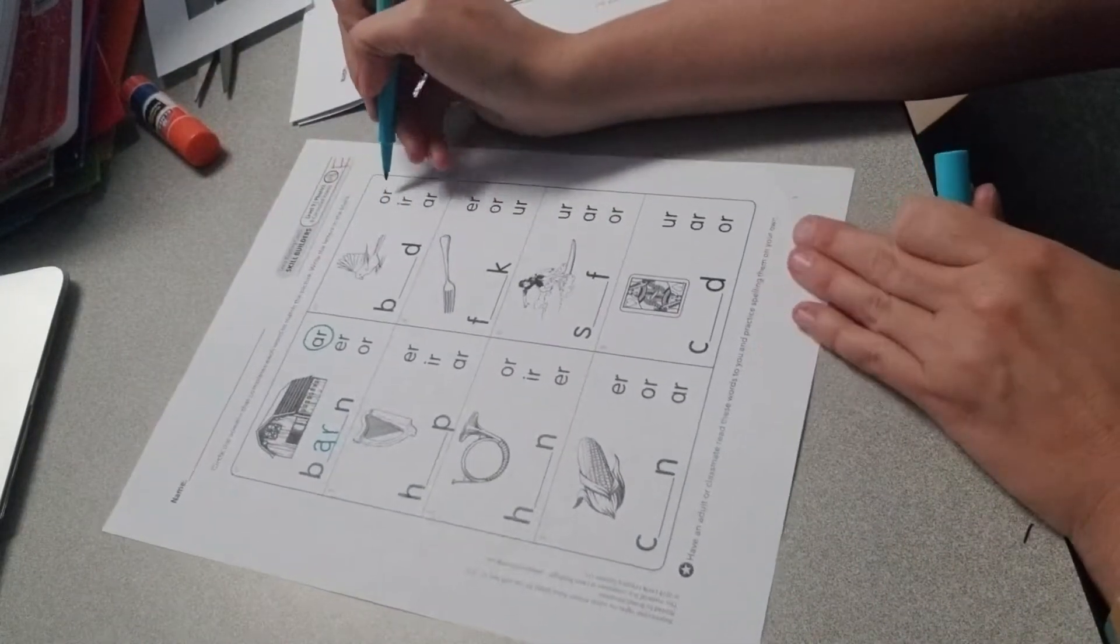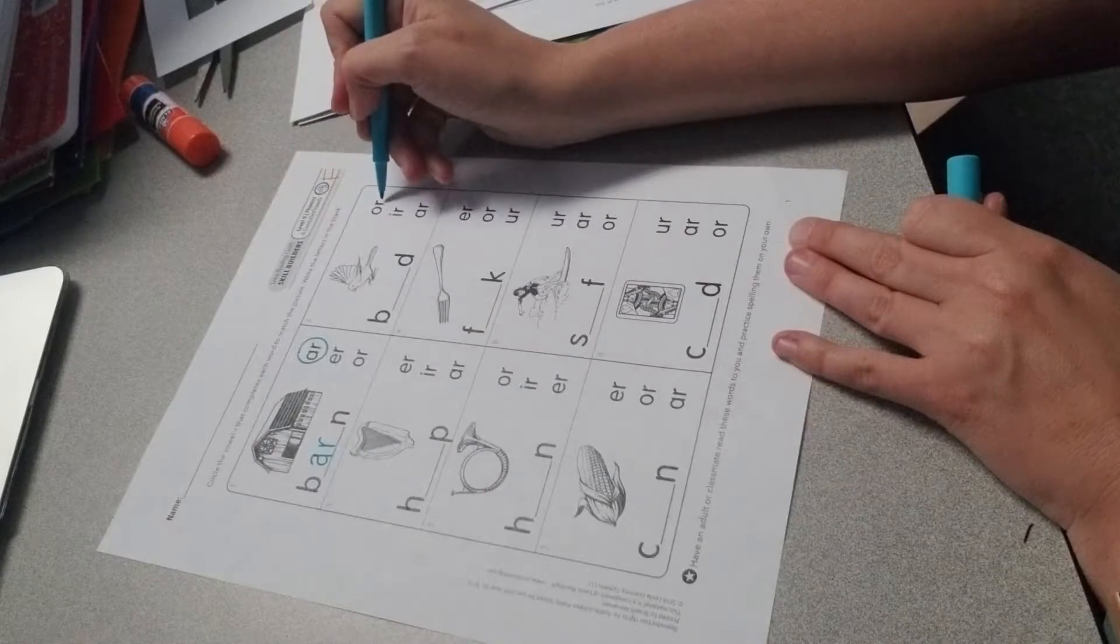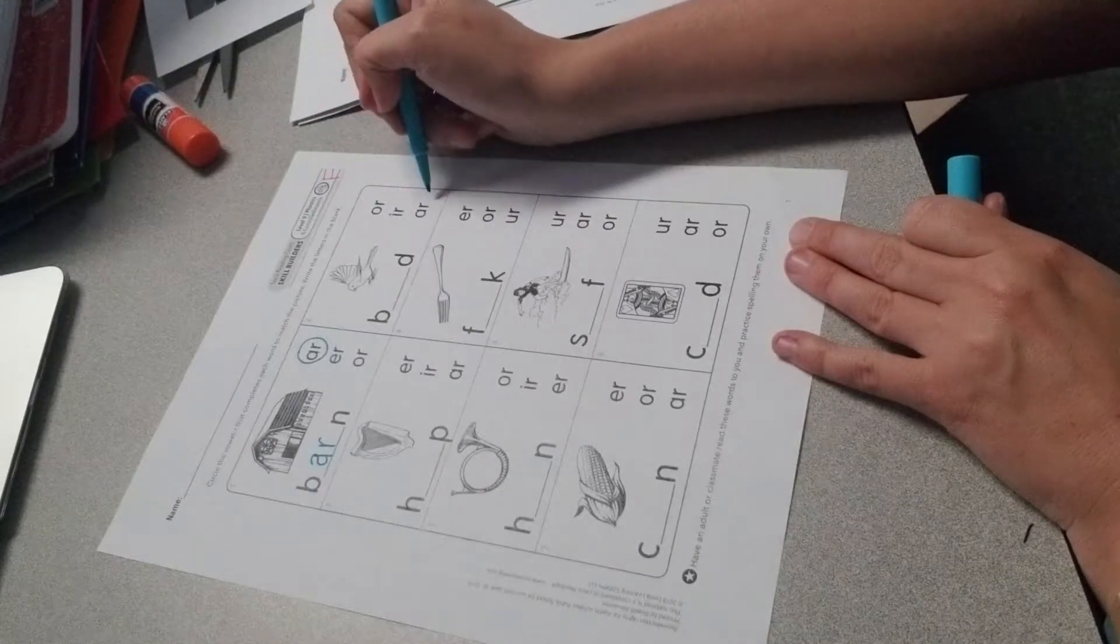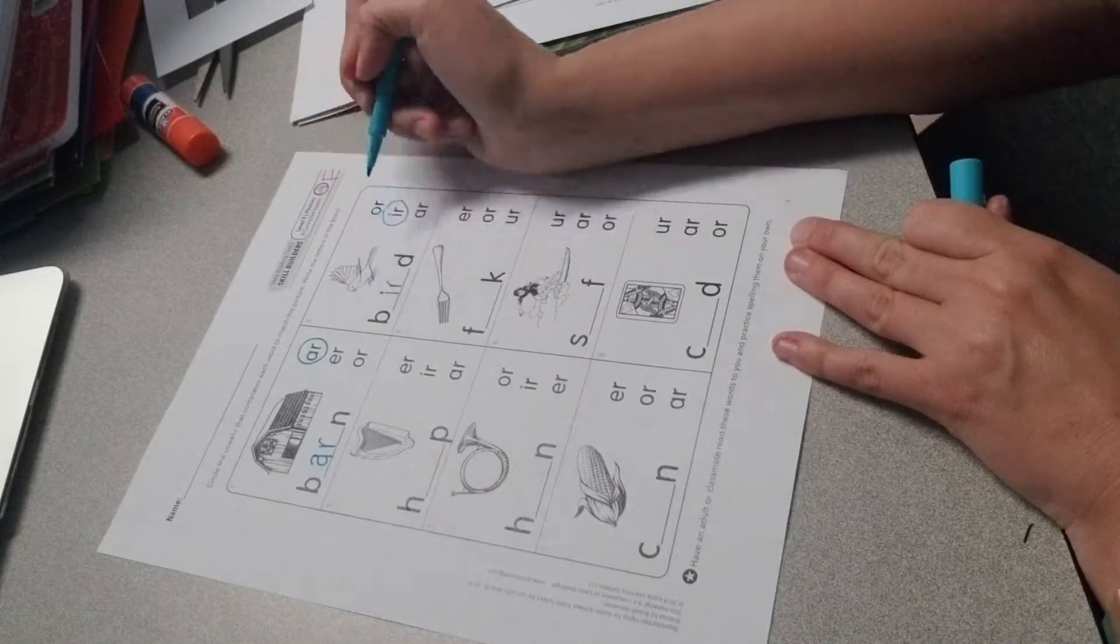Here we have a bird. Would it be OR, IR, or AR? So would it be board, bird, or bard? This is a bird so we want the ear sound. So you're going to put that in the blank.